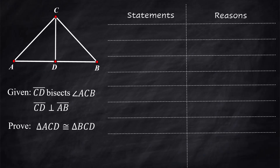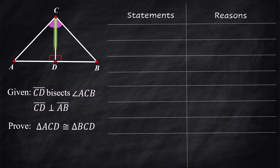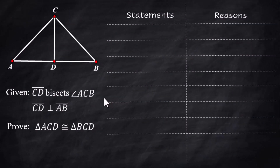Let's use the given information to figure out what we're working with. First, CD bisects angle ACB, so we have an angle bisector, which means the two angles on top are congruent. Then CD is perpendicular to AB, forming two 90-degree angles, so those two angles are congruent. They also share a side, so that side is congruent as well. The theorem we'll use is Angle-Side-Angle.